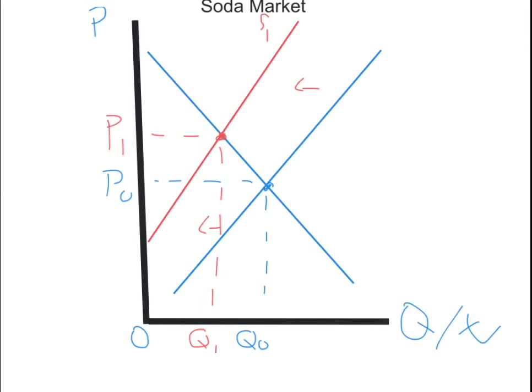Now things have changed because when the government puts taxes on sodas, the willingness of soda market suppliers to produce will actually decrease. The reason is that the more they produce, the more they have to pay to the government, since every unit they produce causes them to pay the government. So they'll be less willing to produce soda, which creates a problem where suppliers won't be able to meet the quantity demanded by consumers.